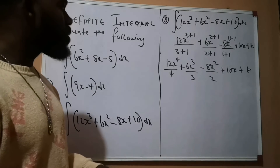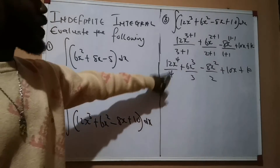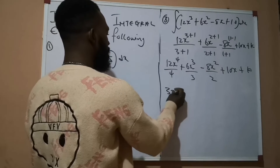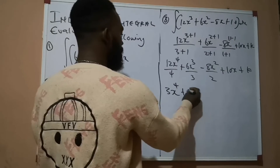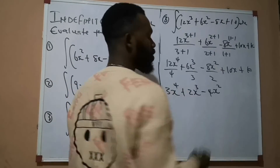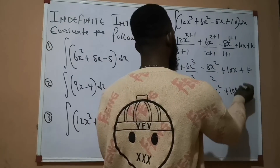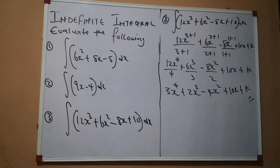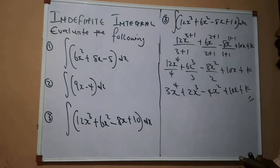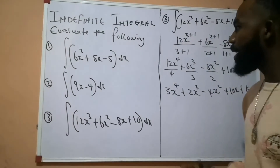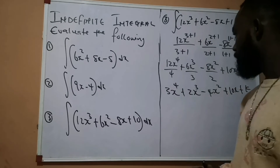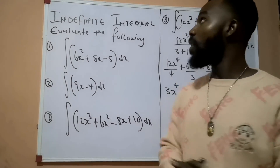Just obey the rule and yes, you are good to go. Now 4 divides 12 to give 3, 3 divides 6 to give 2, and 2 divides 8 to give 4. So the answer becomes 3x⁴ + 2x³ − 4x² + 10x + k. This is the answer to question number 3. You see how simple it is when we solve problems on indefinite integrals — just add 1 to your power and place the new power as the denominator.